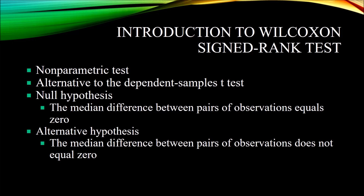The Wilcoxon Signed Rank Test is a non-parametric test, also known as a distribution-free test, and it is a non-parametric alternative to the dependent samples t-test, otherwise known as the paired samples t-test. It's not unusual to use the Wilcoxon Signed Rank Test with data that was originally set to be analyzed with a paired samples t-test, however the data did not meet the assumption of normality for the paired samples t-test. There is no assumption of normality in a Wilcoxon Signed Rank Test.